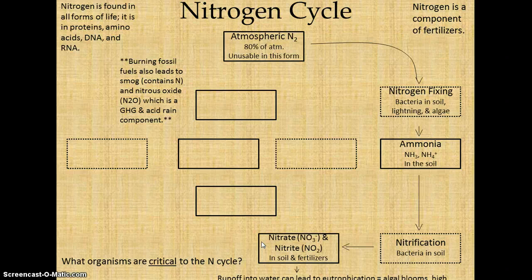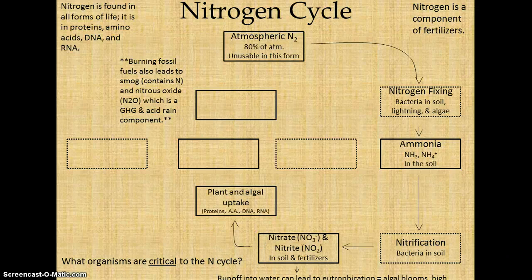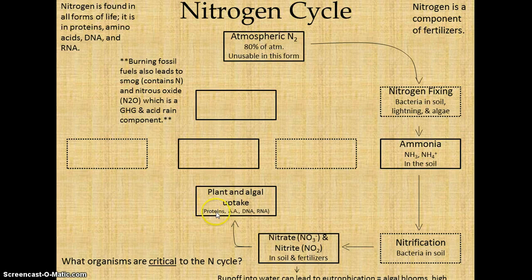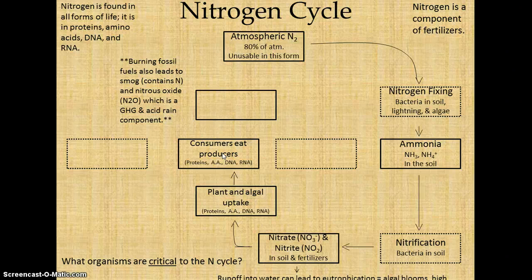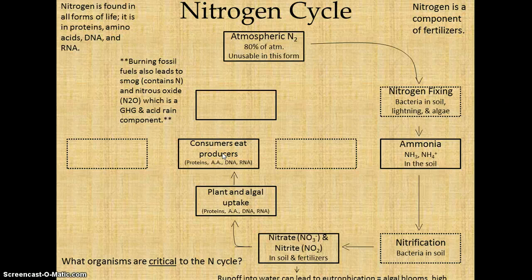The nitrites and nitrates are actually fertilizers — this is what's in Miracle-Gro. Who likes fertilizers? Plants and algae do. They take it in and grow like crazy. They put it into their proteins, amino acids, DNA, and RNA, just like you and I — but we aren't going to go eat dirt. So we eat the plants and algae, and that's how we get it. We eat cows, pork, fish — other things that are eating these plants — and that's how we get the nitrogen. We pack it into our proteins, amino acids, RNA, and DNA. There are consumers.